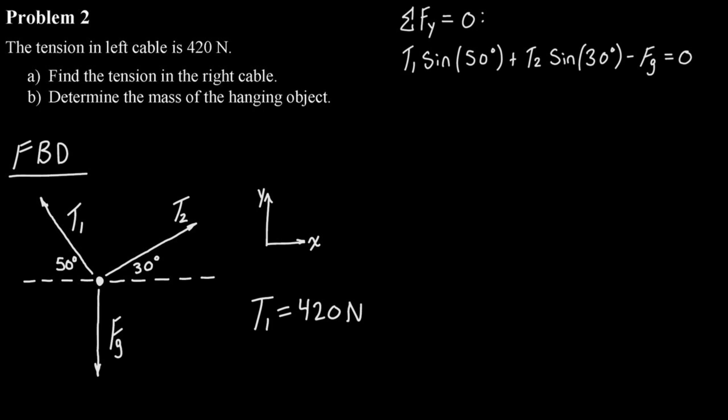And then we've got the same for T2, but with sine 30. And then Fg is pointing downwards, so we're going to call that one negative. And all that will be equal to zero.